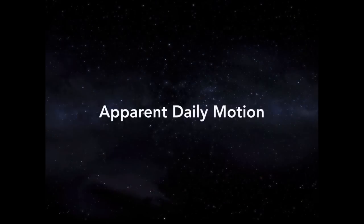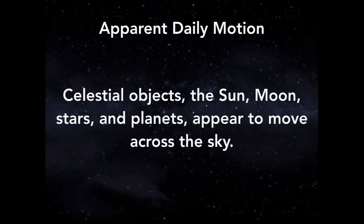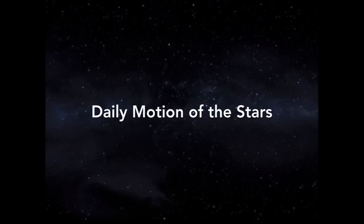So what we're looking at is apparent daily motion. Apparent daily motion states that the celestial objects, which are the sun, the moon, the stars, and the planets, appear to move across the sky. The purpose of this video is to introduce you to the motions of each type of celestial object.